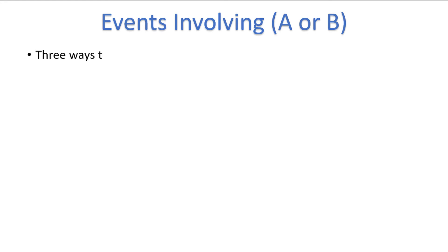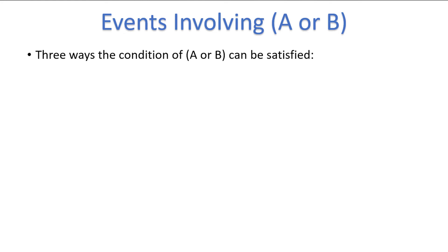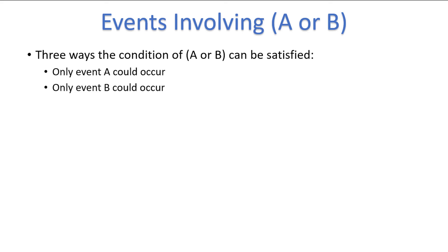There are three different ways that the condition of A or B can be satisfied. First, only event A could occur. Second, only event B could occur. Third, both event A and event B could occur.